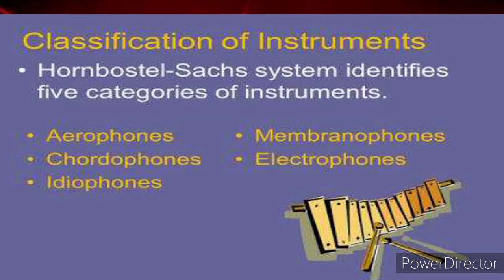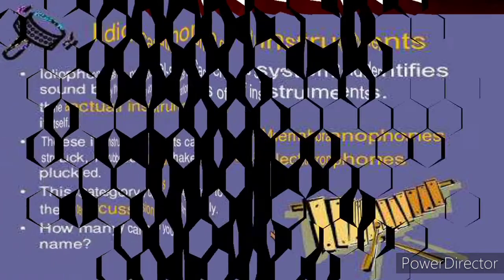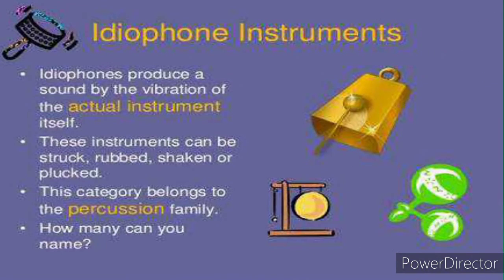We are going to look at each of these five classifications. The first on our list today is the ideophone. Ideophones produce sound by the vibration of the actual instrument itself. These instruments can be struck, rubbed, shaken, or plucked. They all fall under the category of percussion. Percussion, wind, and string are the three main families, and ideophones fall under percussion because they are instruments that can be shaken.